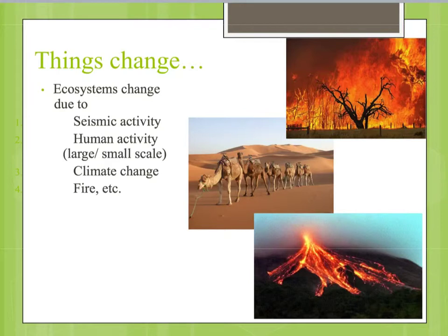Human activity can also affect ecosystems. It could be on a very large scale, where perhaps a whole wetland is drained and it's gone from being wetland to much drier soil, so different species would live there. Or it may be on a very small scale, by doing something as simple as turning over a rock so that that particular little patch of soil is no longer shaded and moist — it's now bright and dry.